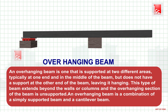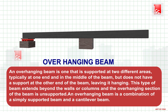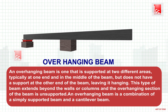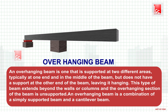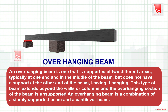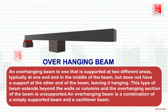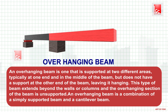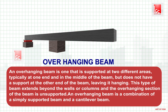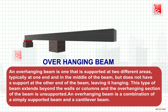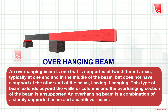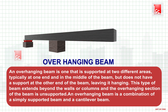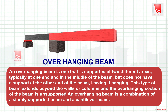Overhanging beam. An overhanging beam is one that is supported at two different areas, typically at one end and in the middle of the beam, but does not have support at the other end, leaving it hanging. This type of beam extends beyond the wall or column, and the overhanging section is unsupported. An overhanging beam is a combination of a simply supported beam and a cantilever beam.